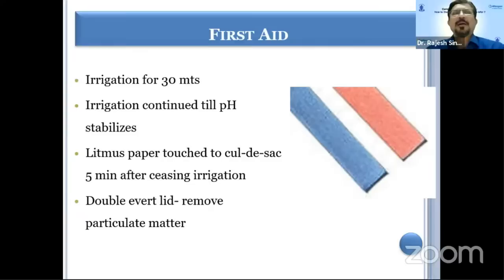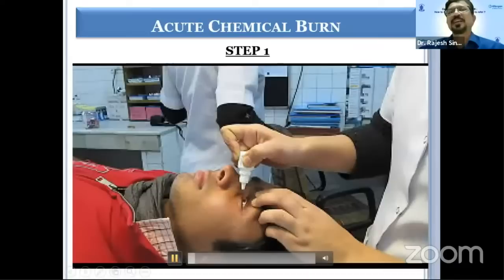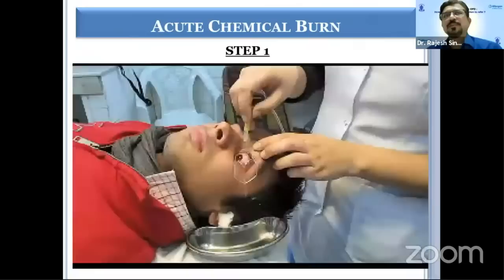Irrigation is done on average for about 25 to 30 minutes. However, time is not the guiding factor — the guiding factor is the pH, and pH should return to normal. pH paper should definitely be used. One precaution: wait five minutes once you have completely stopped irrigation, then check the pH, because otherwise it will show the pH of the irrigating solution being used.